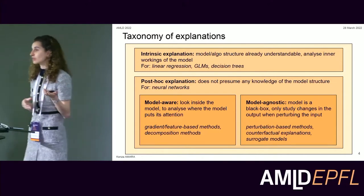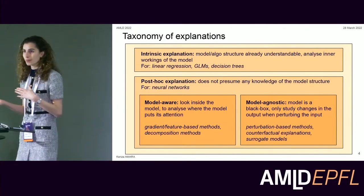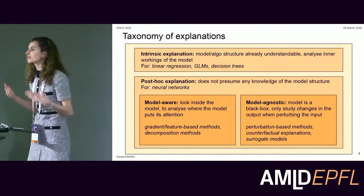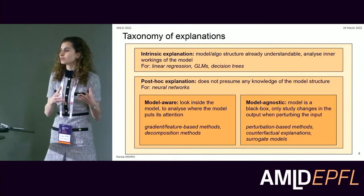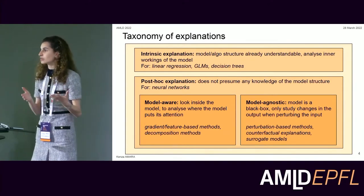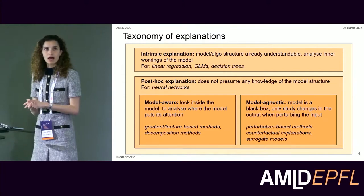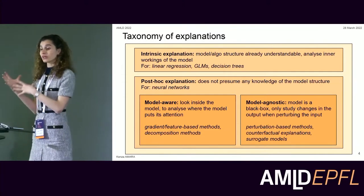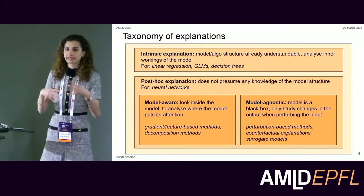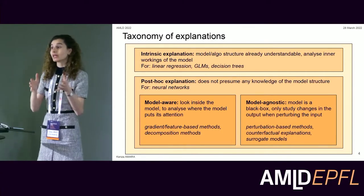I present here a taxonomy. We first distinguish intrinsic explanations from post hoc explanations. Intrinsic explanations are produced from models that are self-understandable — for instance, linear regression models understood by their estimated coefficients, decision trees, or decision rules by nodes, splits, or if-else rules. Post hoc explanations, on the other hand, are produced by an external method called the explainer, applied once the graph neural network has been trained.